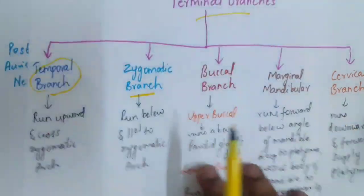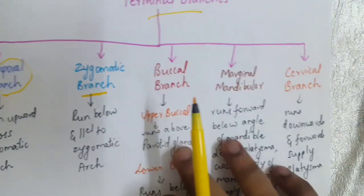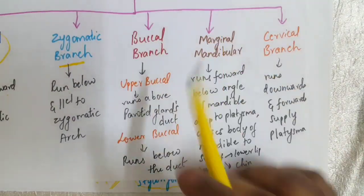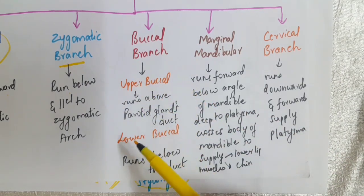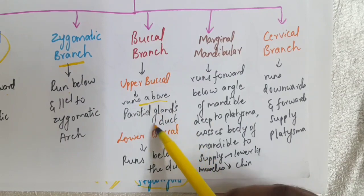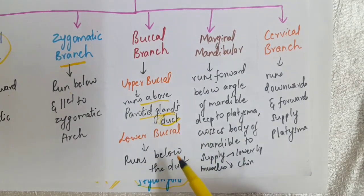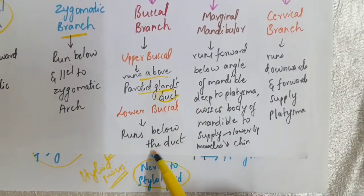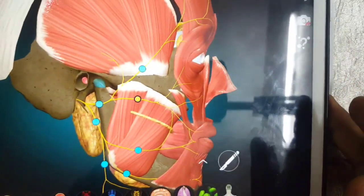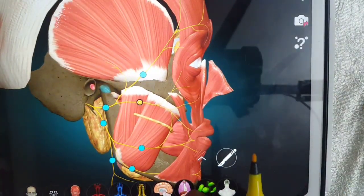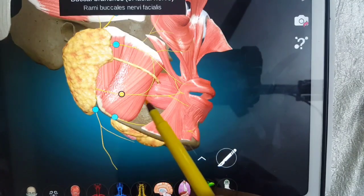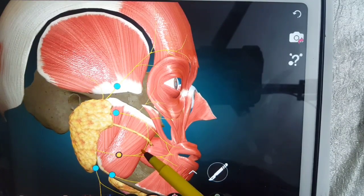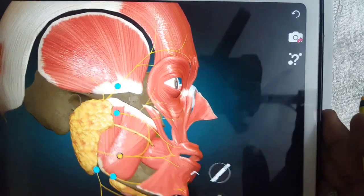The third branch is the buccal branch, which has two sub-branches: the upper buccal and lower buccal. The upper buccal branch runs above the parotid duct and the lower buccal branch runs below the parotid duct. In the diagram with the parotid gland restored, this is the parotid duct, this is the upper buccal branch, and this is the lower buccal branch of the facial nerve.